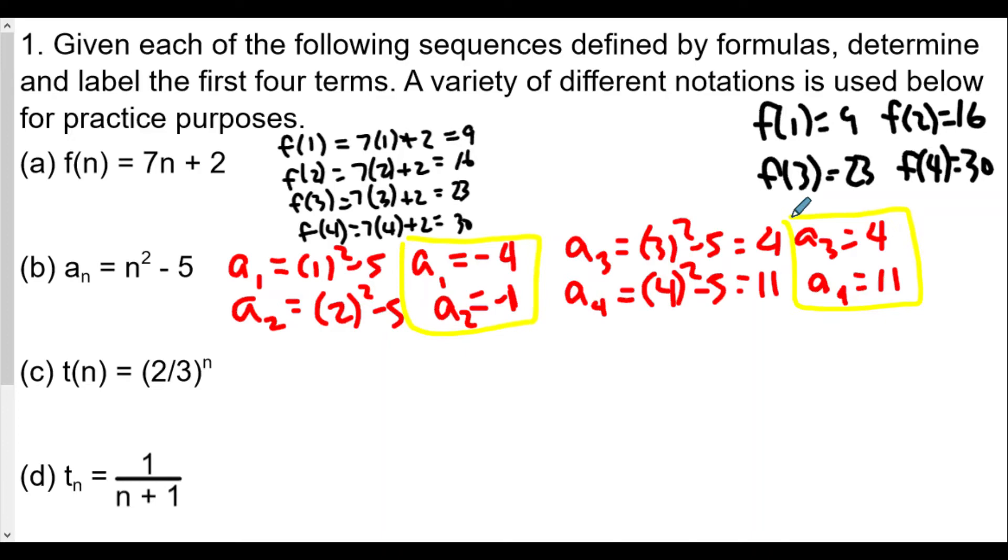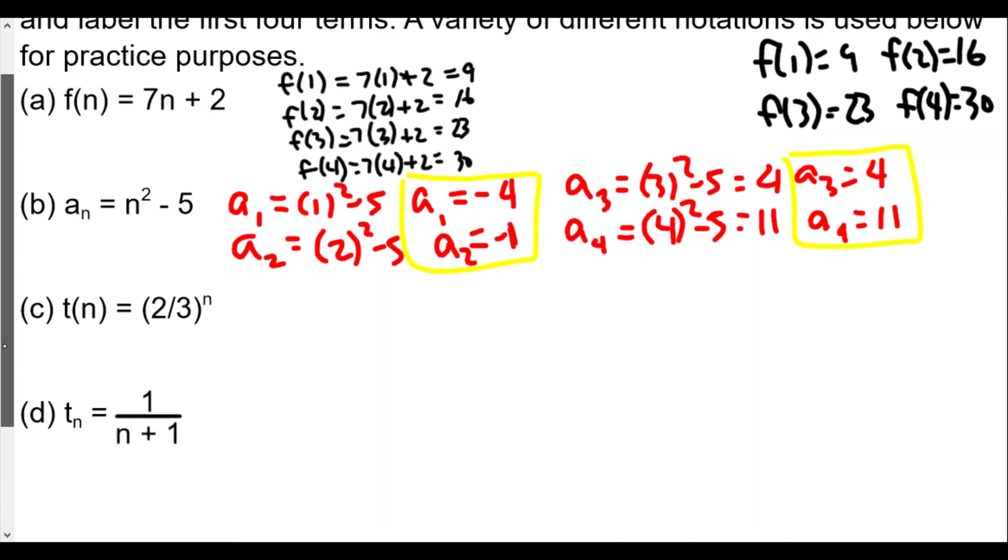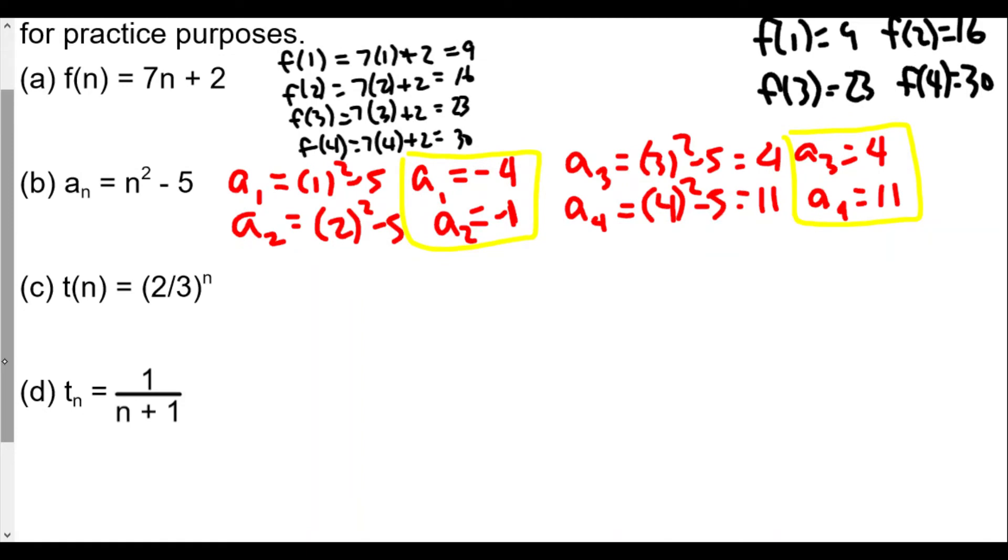Now we move on to the third one. We're using t instead of a, and it's okay, it's almost like a variable thing. Here we use t(n), so t(1), the first term, is equal to (2/3) to the first power, which is really just 2/3. t(2), our second term, is going to be (2/3)².